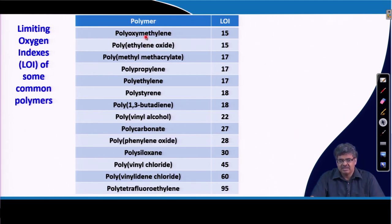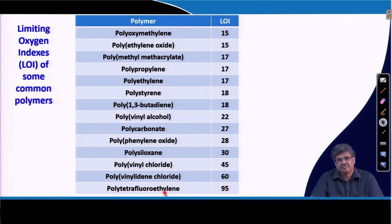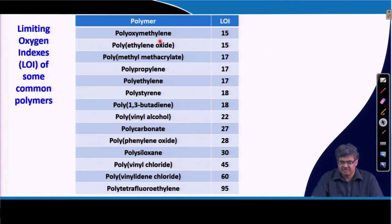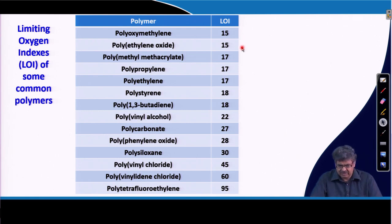A higher LOI value means more oxygen is required to sustain flame — so the polymer is less flammable. A lower LOI means the polymer burns with less oxygen and is more flammable. For example, PTFE requires 95% oxygen, so its flammability is very low — it is used for non-stick coatings. Polyoxymethylene and polyethylene oxide require very low oxygen and are highly flammable.